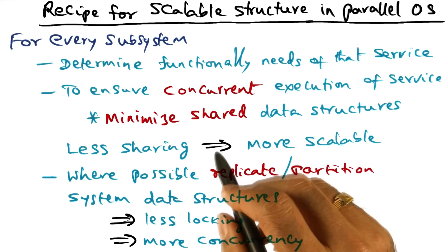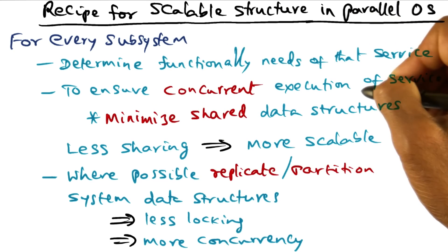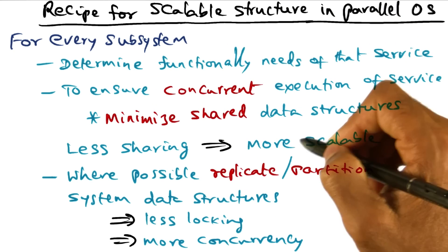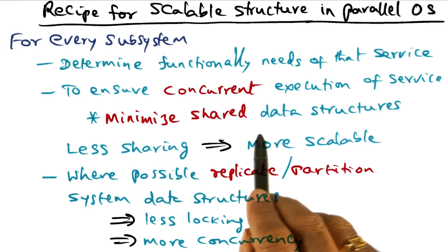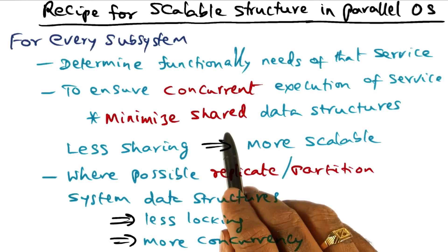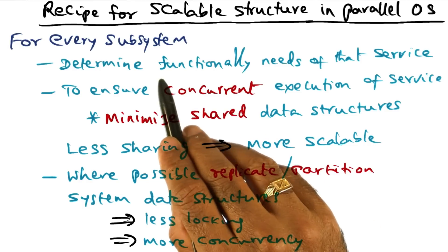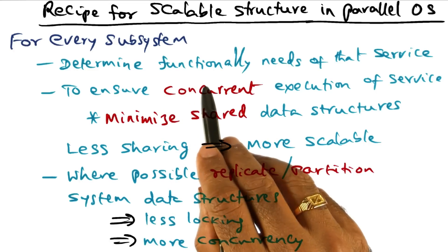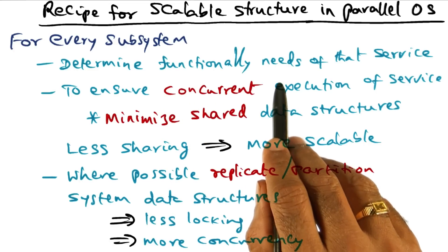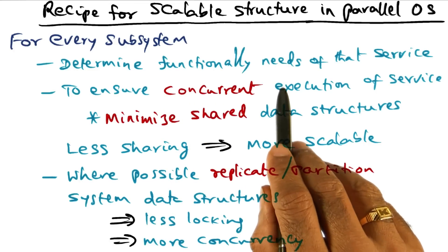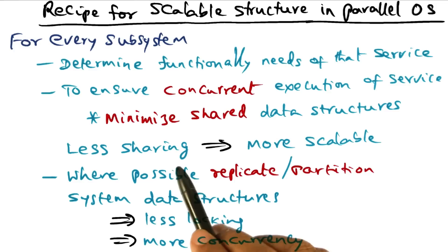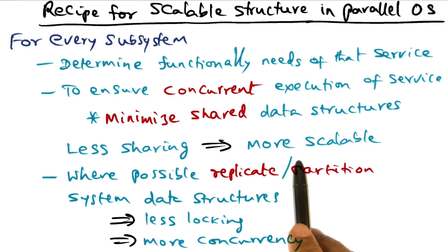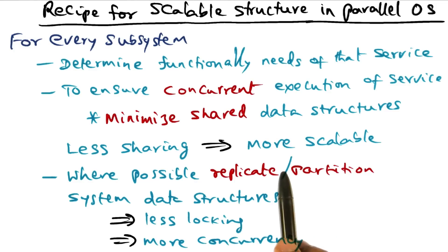That's the easy part. But in order to ensure concurrent execution of the service, you have to minimize the shared data structures. Only if you minimize the shared data structures will you really be able to execute the functional part of that service concurrently on the available processors. So less sharing will result in a more scalable implementation of the service.